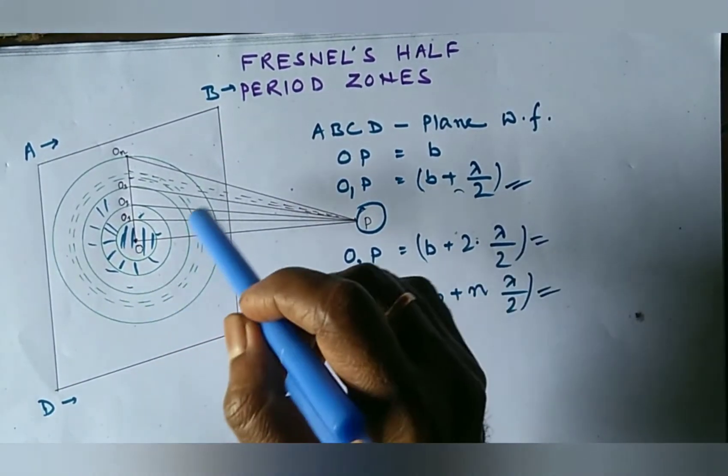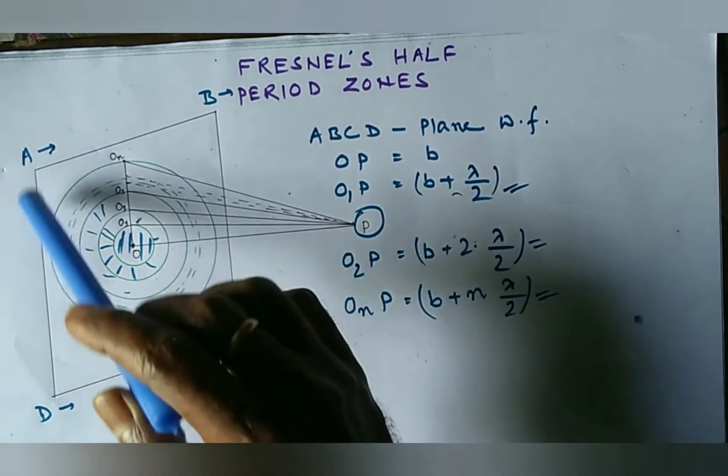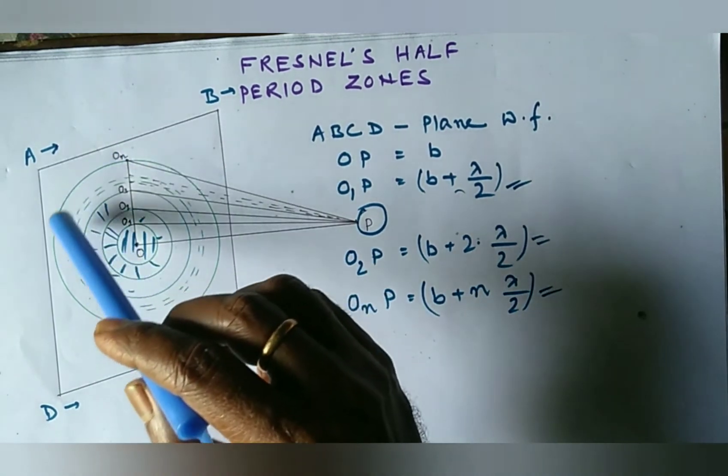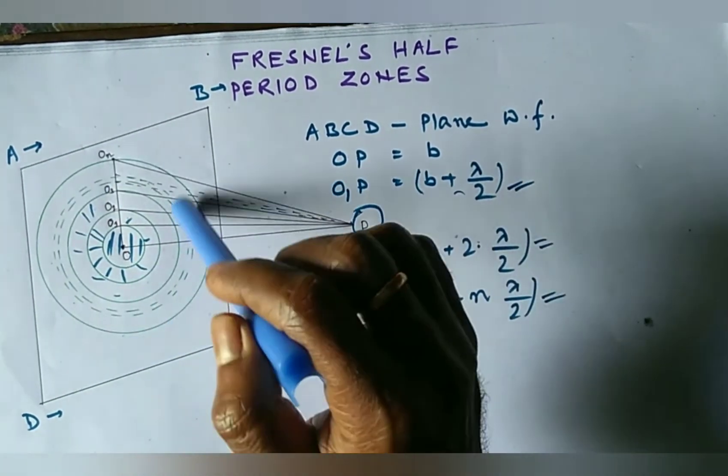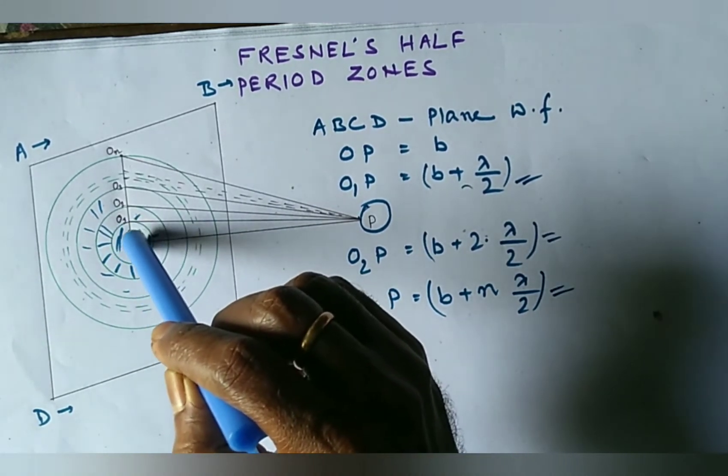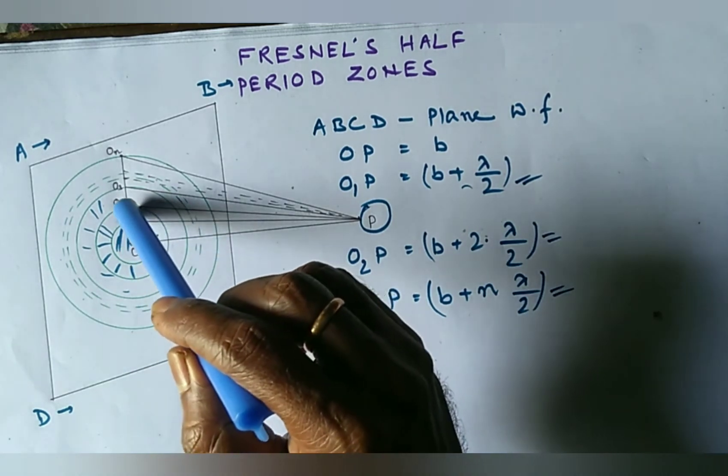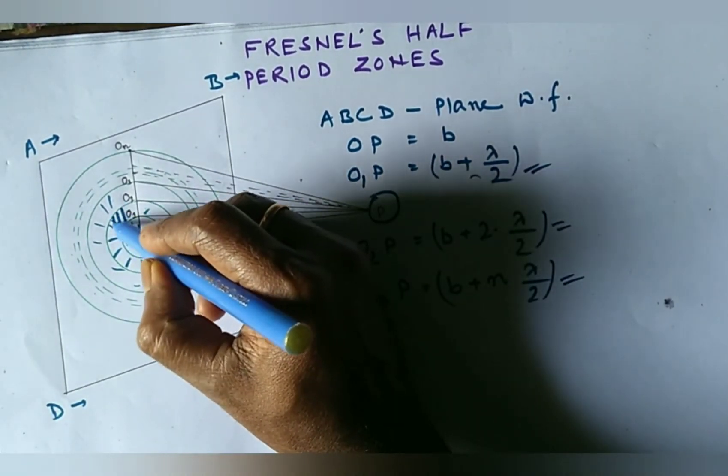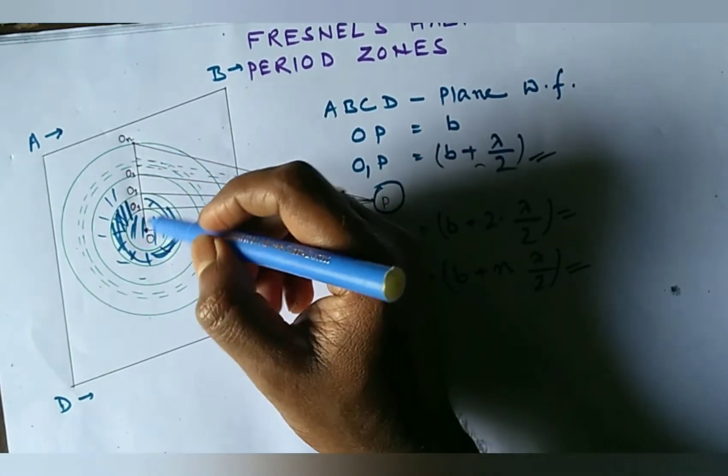If we assume that the spheres are cut by the plane wavefront, then we get the section of the sphere as circles of different radii, which are shown in the diagram. The space occupied by the first circle is called the first half-period zone, and the annular space between adjacent radii is called the second half-period zone, and so on.